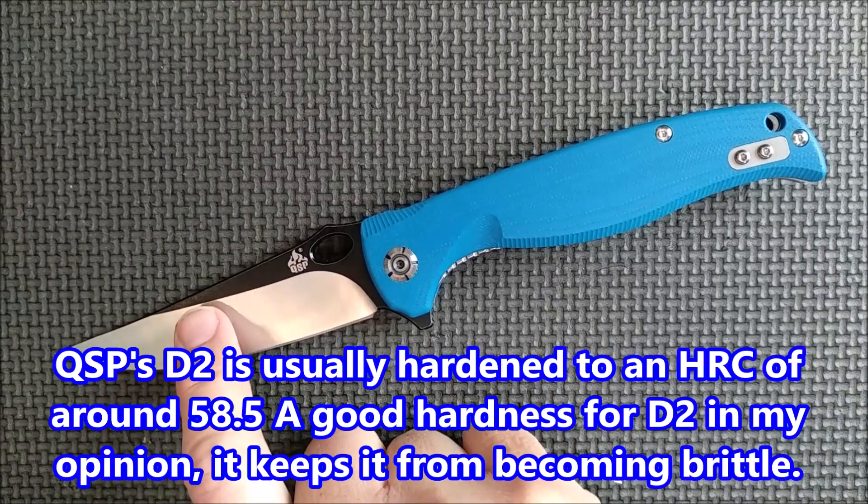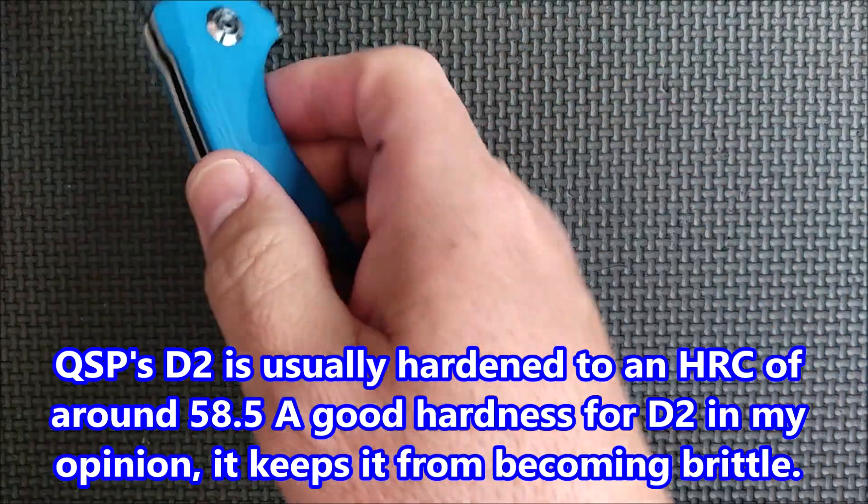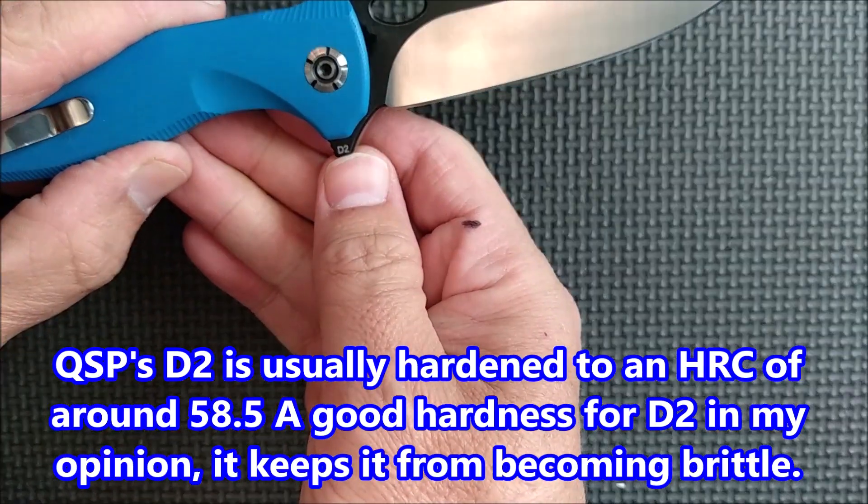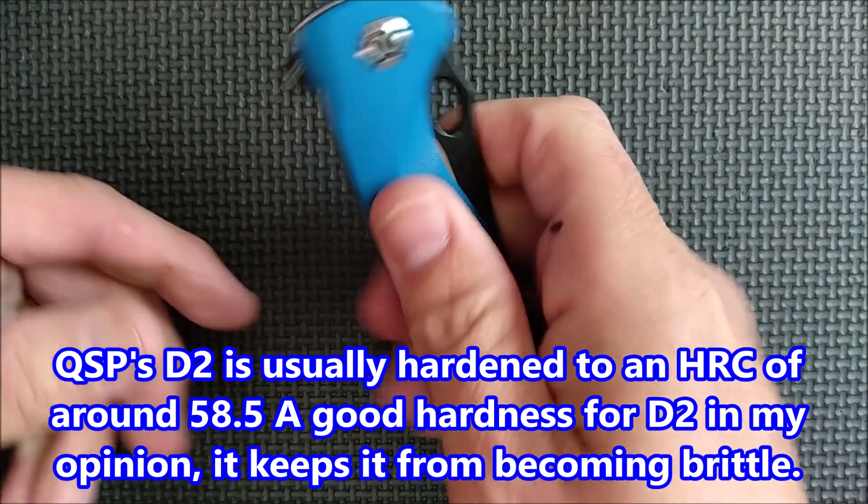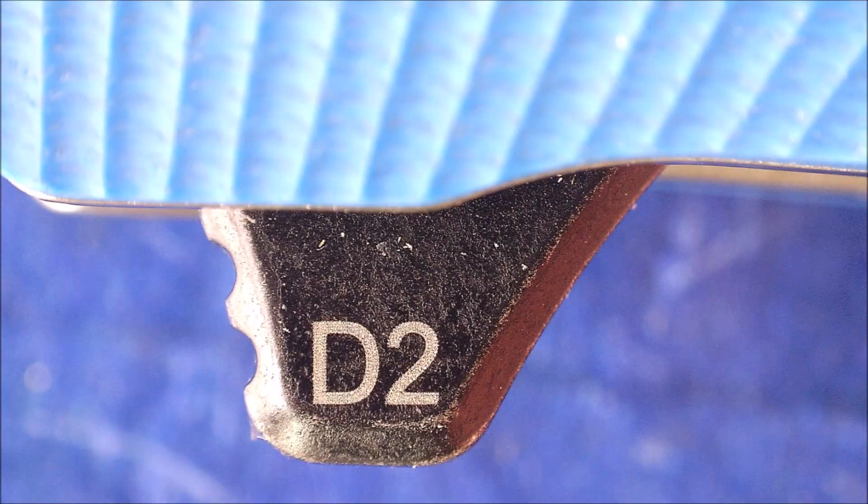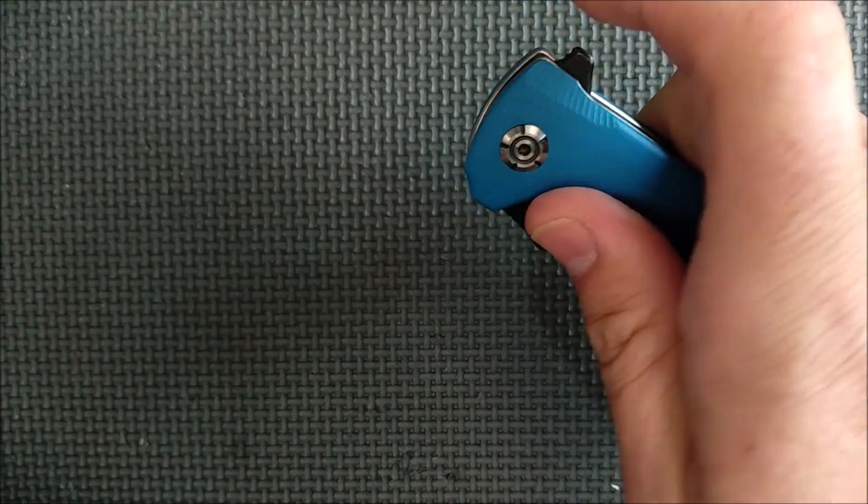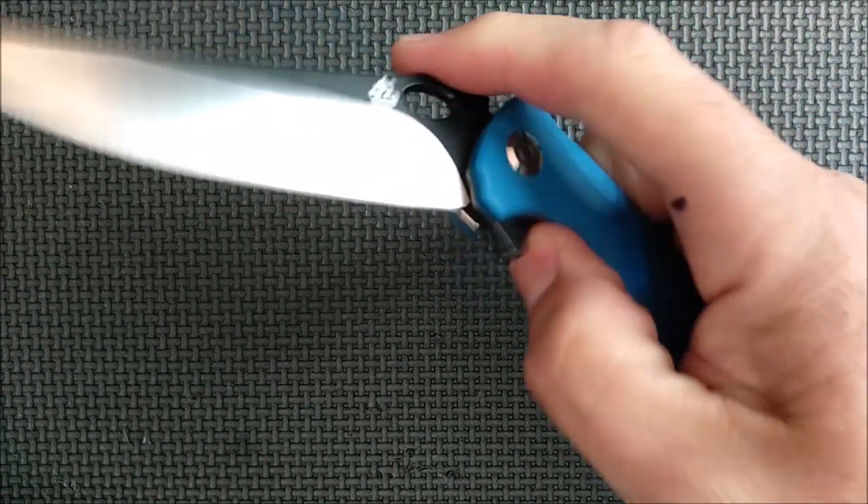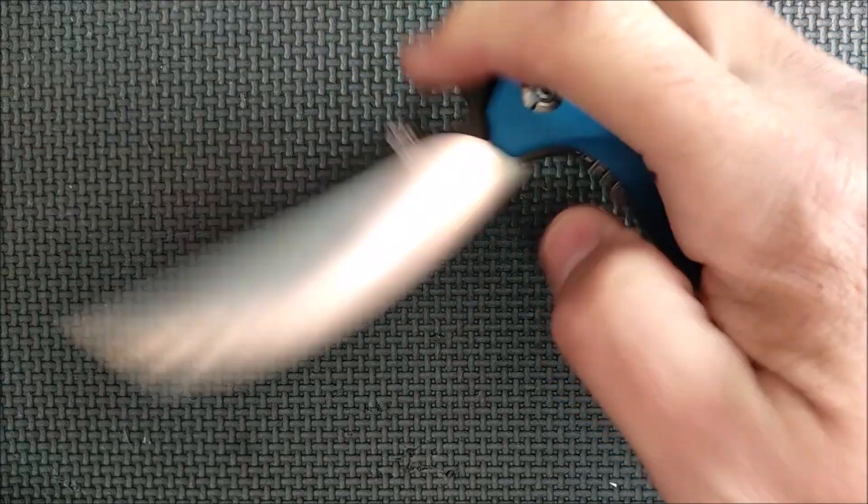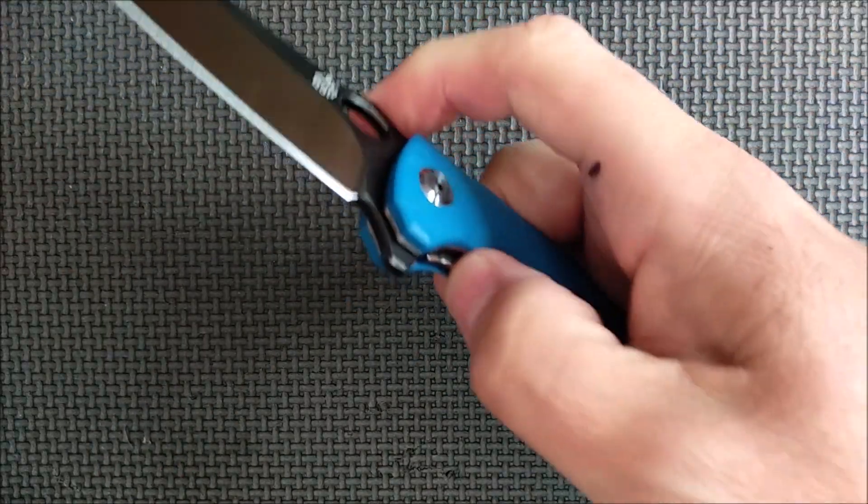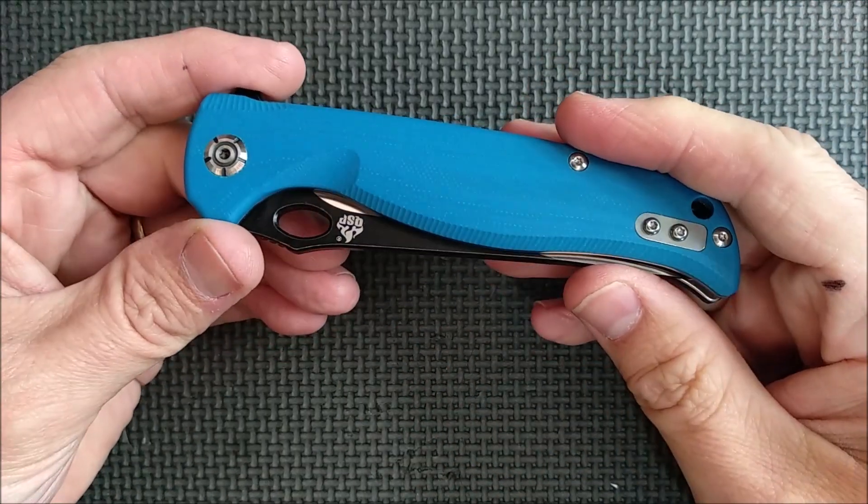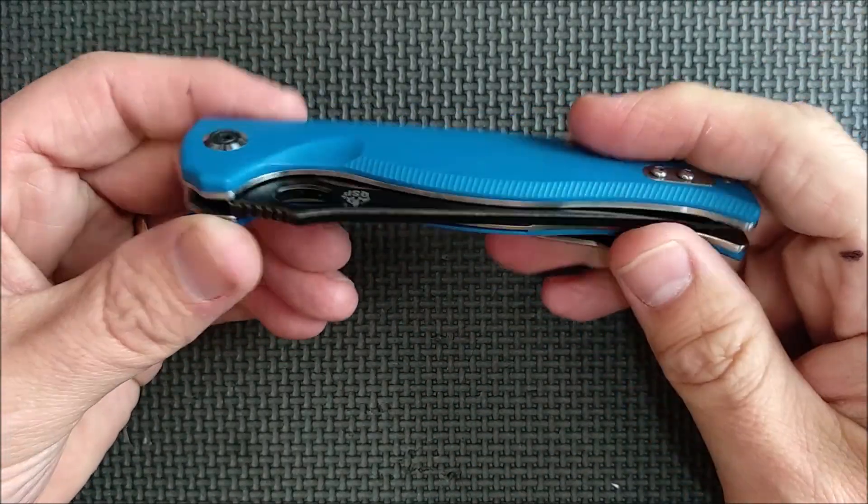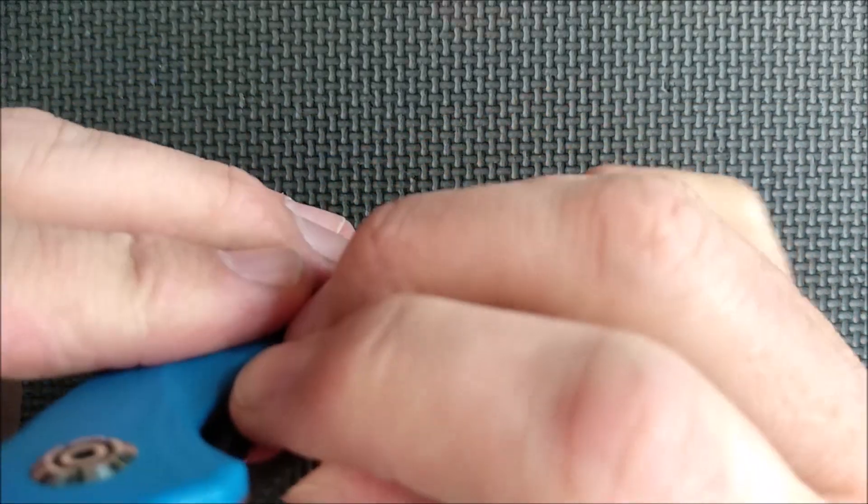Let's get into this knife. The blade here, D2 steel, and they put the D2 right there on the flipper tab. And the flipper works very well. Light switch method. Push it down on just a slight angle, comes flying out. Ceramic ball bearings on this QSP, just like most QSP knives.